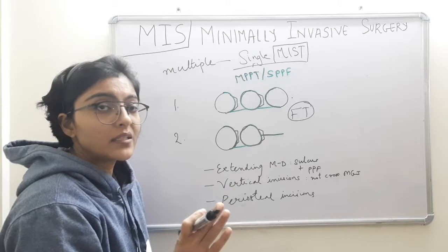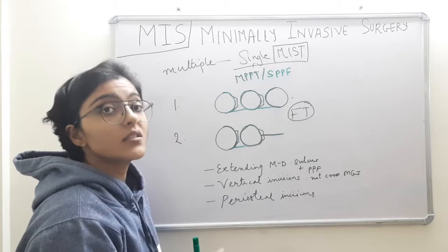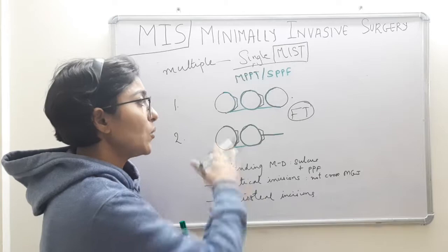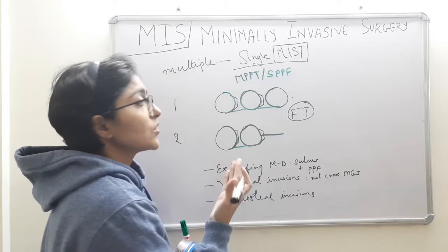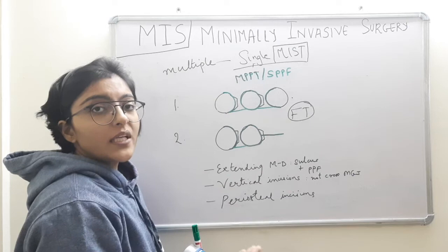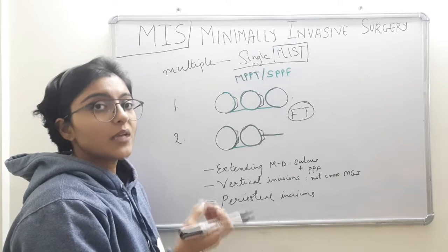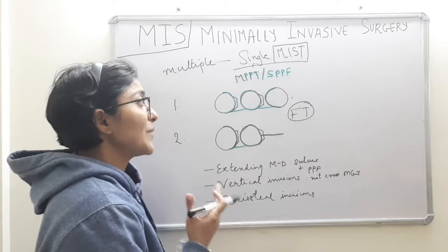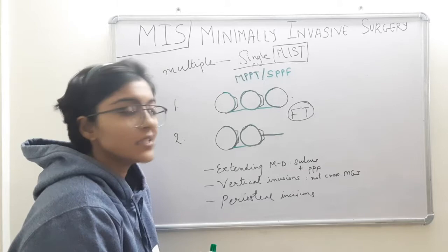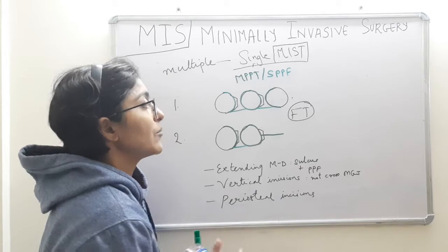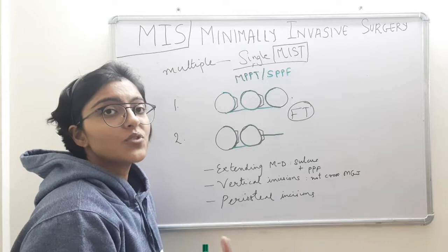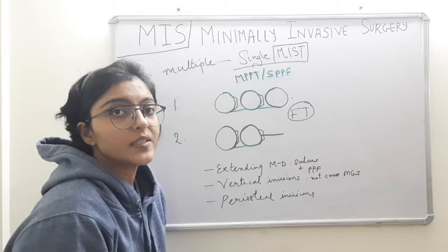Single MIST is everything based on the principles and technique of MIST, with few modifications required if the defect is inaccessible. Once the incisions and reflection are performed thoroughly, the root and defect are accessible. Then root planing and defect debridement are performed, followed by the regenerative procedure — graft and membrane. Most commonly, EMD (Emdogain) is used in conjunction with minimally invasive surgical techniques, though it differs from case to case. Once Emdogain is placed, finally suturing with modified internal mattress sutures is performed and surgery is completed.